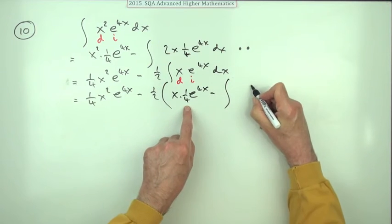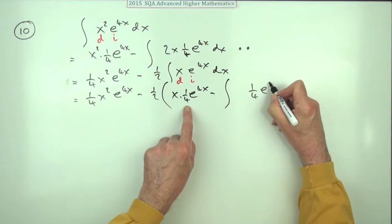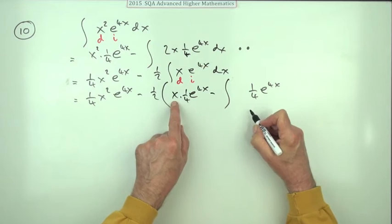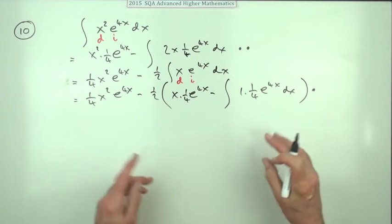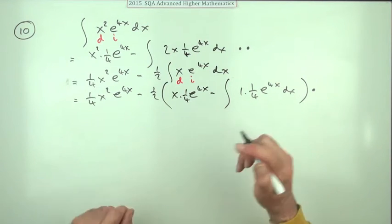That waits. Now that's been done. So it was a quarter of e to the 4x. And this gets differentiated down to 1 dx. That's the third mark for the second application for doing it again.